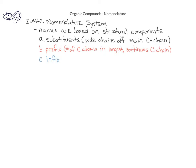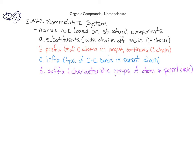The infix part of the name describes the type of carbon-carbon bonds that are present in the parent chain — in other words, are all the carbon-carbon bonds single bonds, or is there at least one carbon-carbon double bond, or is there a carbon-carbon triple bond? The final part of the name is the suffix, which indicates the characteristic groups of atoms that are present.